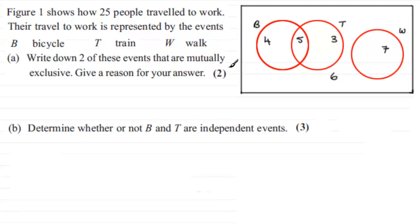Well, when two events are mutually exclusive, there's no overlap between the events. The intersection is, in other words, zero. So we could have, for instance, the events T and W. Or you could have B with W. There's no overlap between those two events.